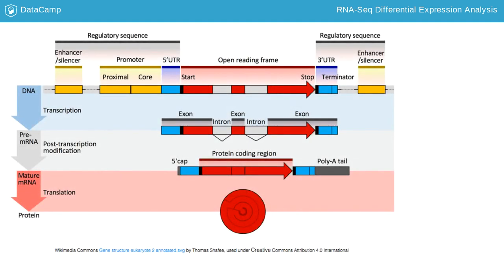To be translated into proteins, mRNA must undergo processing. In this figure, the top strand in the image represents a gene in the DNA, comprised of the untranslated regions, UTRs, highlighted in blue, and the open reading frame, highlighted in red. Genes are transcribed into pre-mRNA, which still contains the intronic sequences.